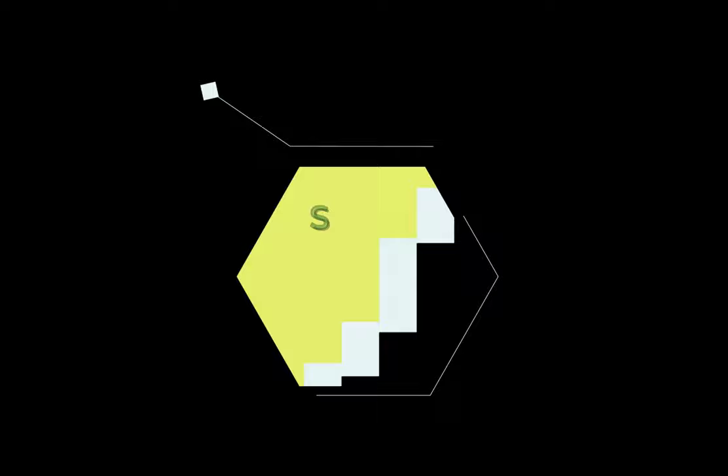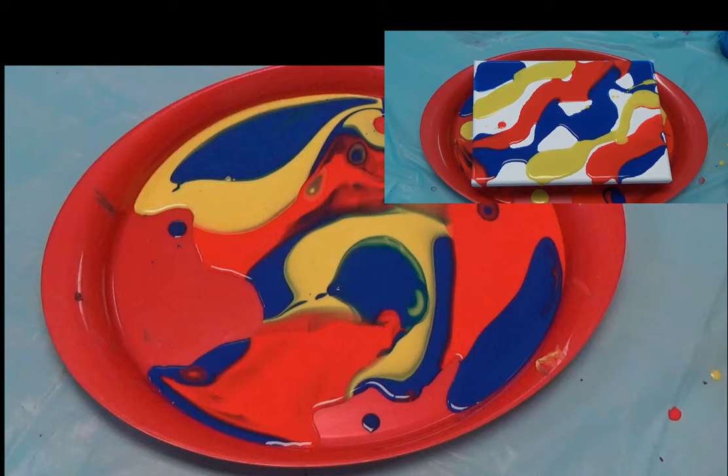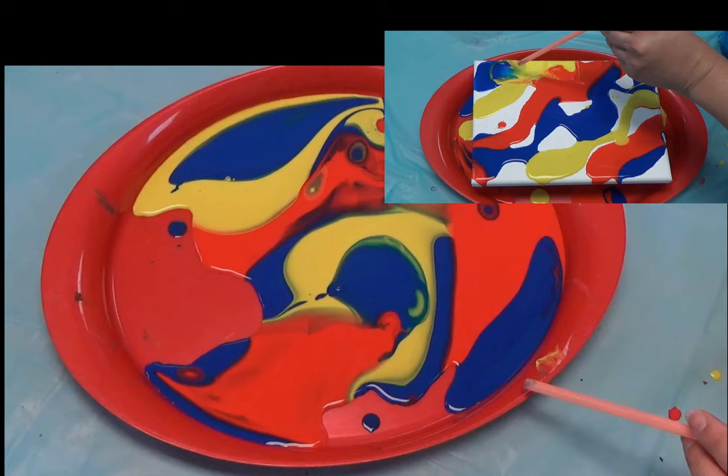Step four, using the straw to blow with the paint. Once you are done pouring your paint, you will need to grab your straw. Hold the straw close to the paint but not touching it. Then you will need to take a nice deep breath and blow slowly through the straw.